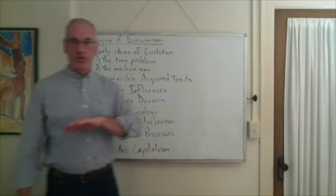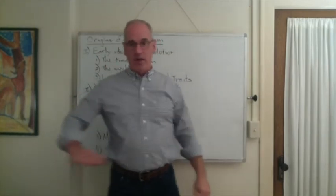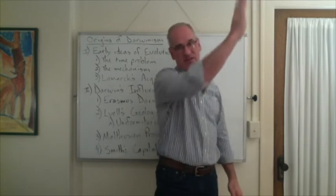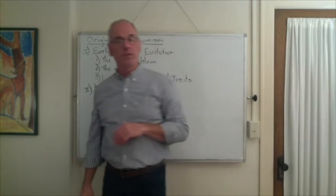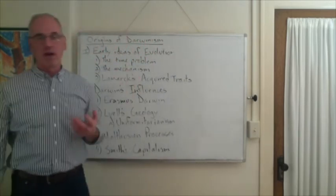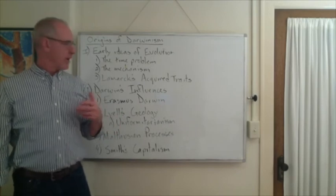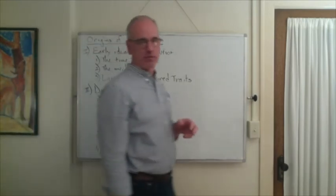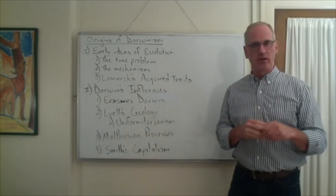Malthus said basically if your food supply is growing at a steady rate and the population is growing like that, there's going to be a point at which the population zooms past the food supply and then you're going to have a population crash. Most people are going to die out. We know this actually happens.